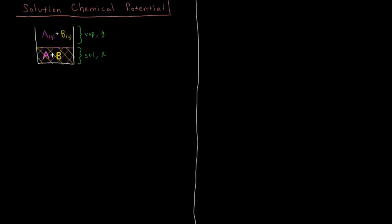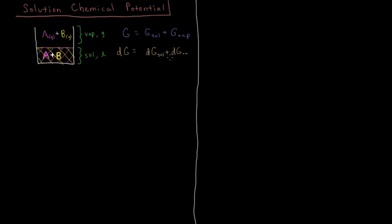We want to look at the chemical potential of the vapor phase and the solution phase. To do that we look at the Gibbs energy, which is the sum of the Gibbs energy of the solution G_sol plus the Gibbs energy of the vapor phase G_vap. The differential DG is just DG_sol plus DG_vap, so the change in total Gibbs energy equals the change in the solution plus the change in the vapor.